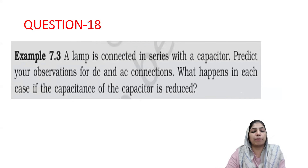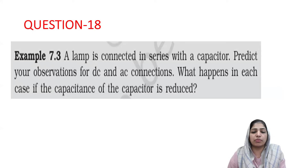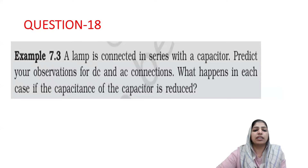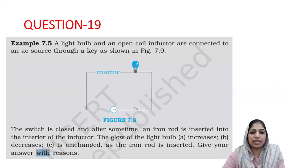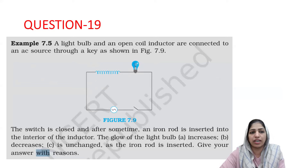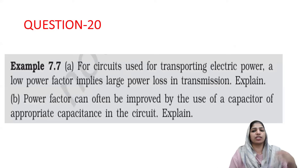The 18th question is from the chapter on Alternating Current — it is a theory question. When something is inserted between the plates of a capacitor, what will happen to the glow of the bulb? Question 7.5 is related to an inductor — also a theory with high repeat value. Question number 20 is Example 7.7, also a theory question.